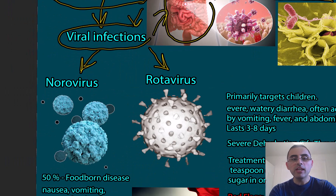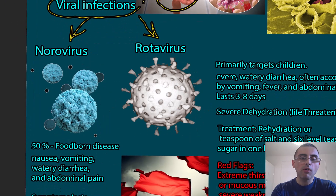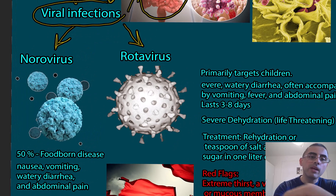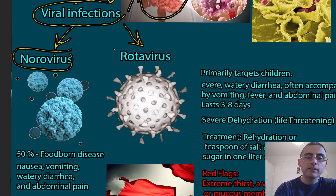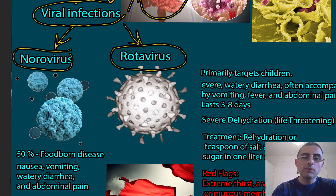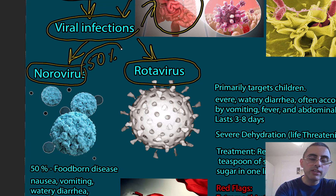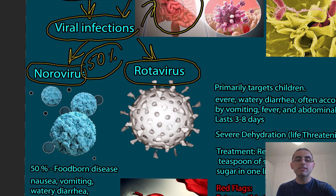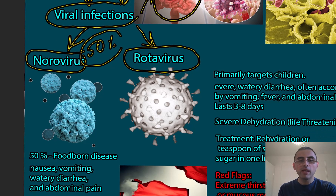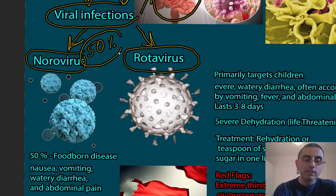Now, let's talk about the most common causes of stomach flu. The most common causes are norovirus and rotavirus. These two viruses are the most common pathogens that can cause stomach flu. Norovirus is responsible for 50% of foodborne disease, which means it's an extremely common virus and one of the most common causes of food poisoning.